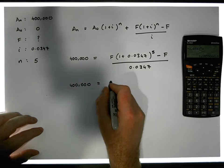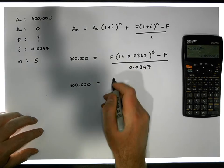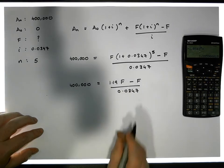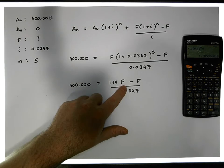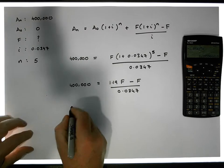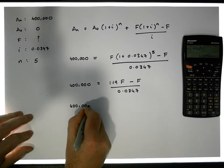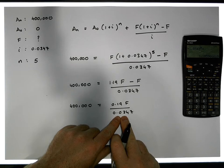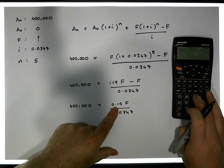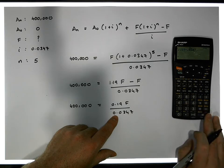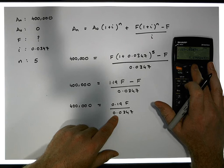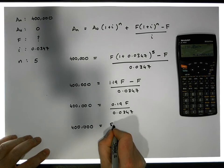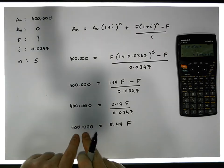400,000 = 1.19f − f, all divided by 0.0347. Taking 1.19f and subtracting one whole f leaves 0.19f. So we have 400,000 = 0.19f / 0.0347. Dividing 0.19 by 0.0347 gives approximately 5.48, so 400,000 = 5.48f.